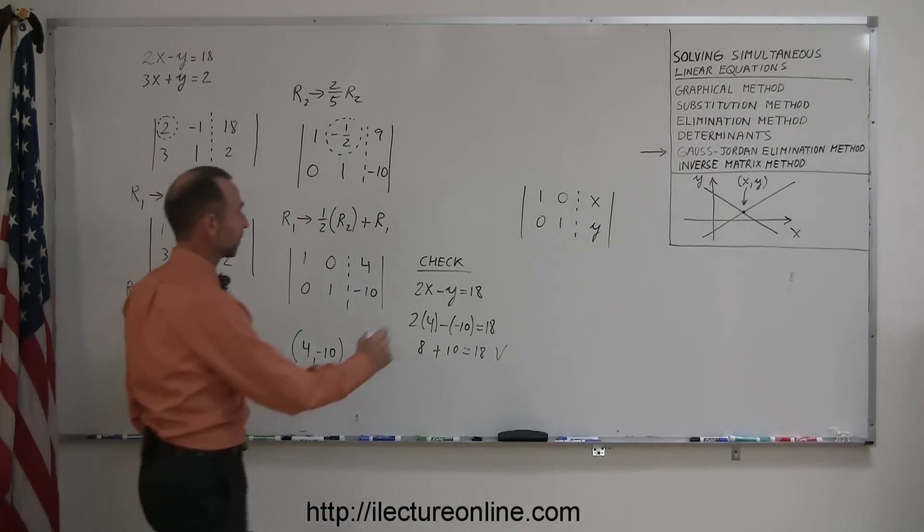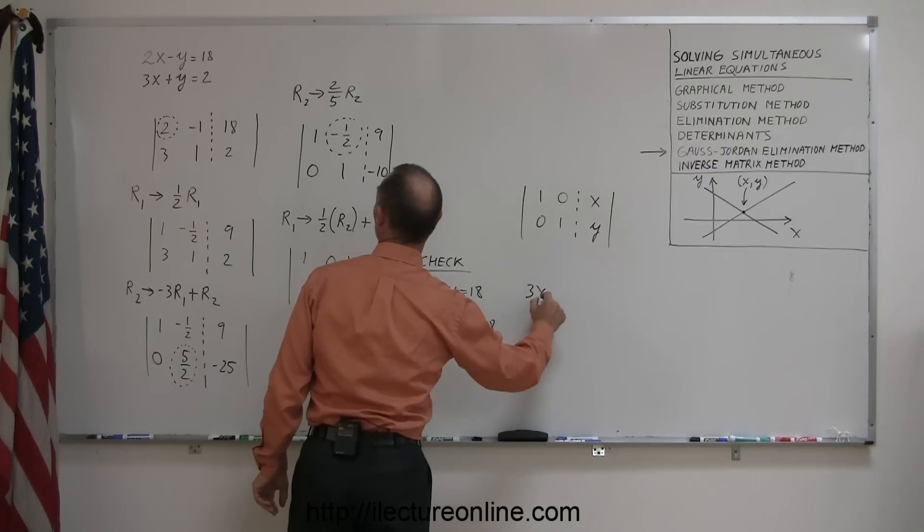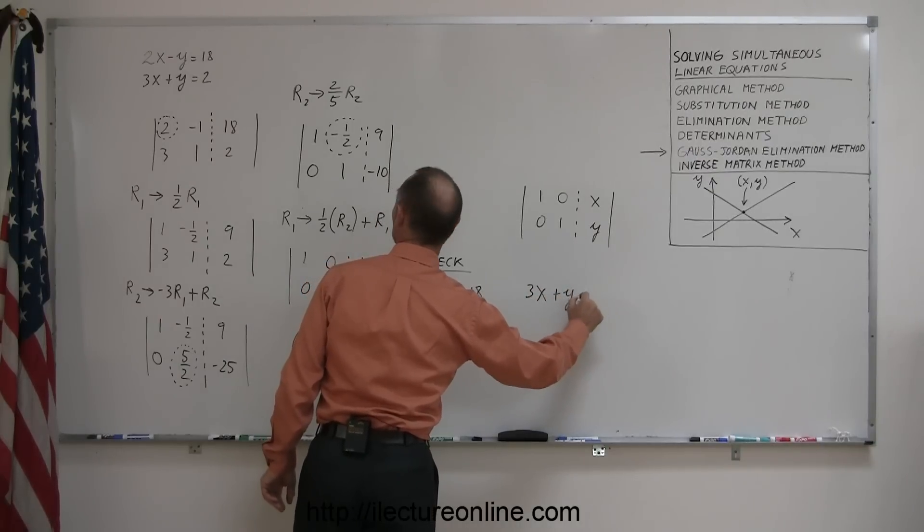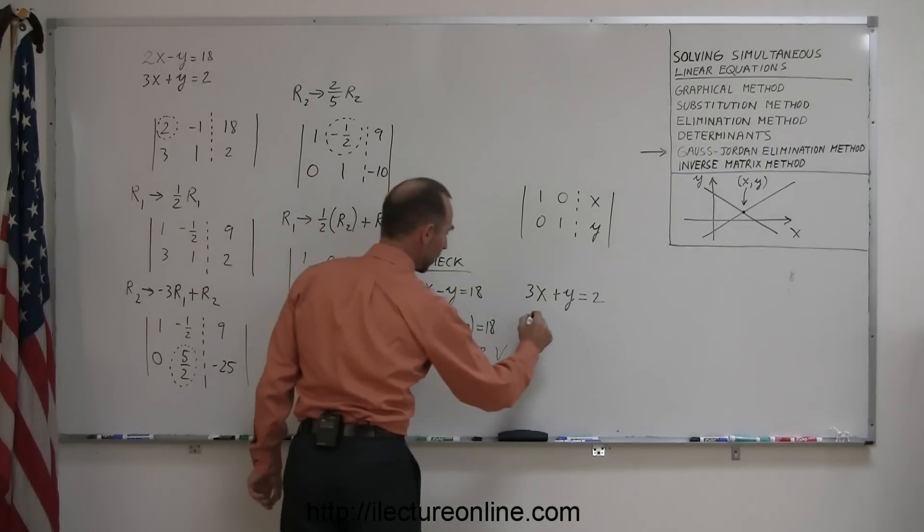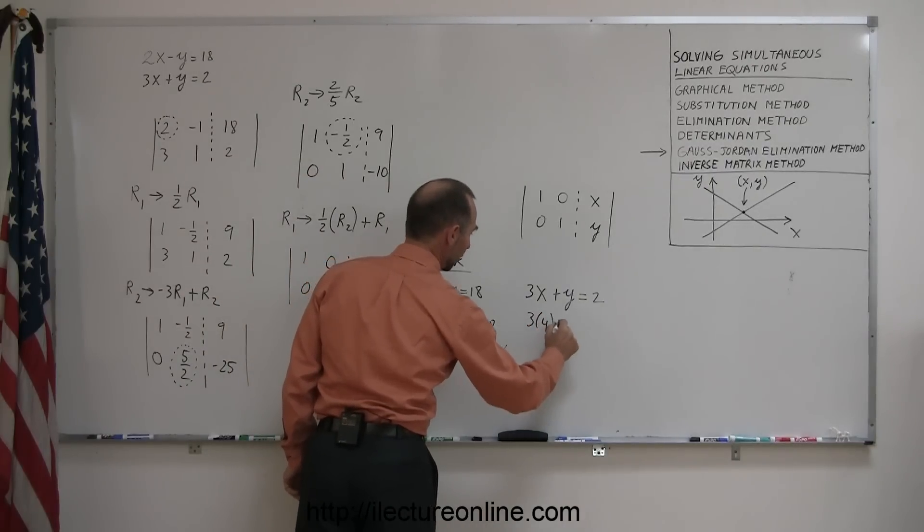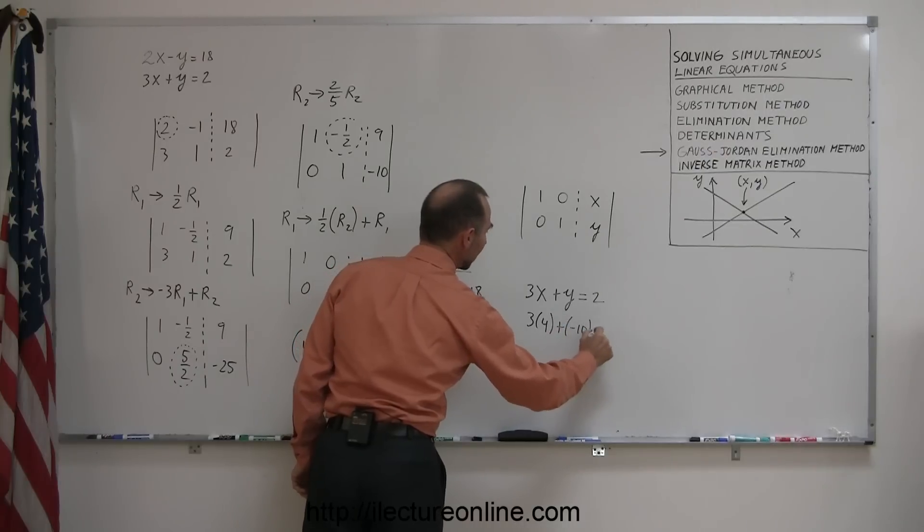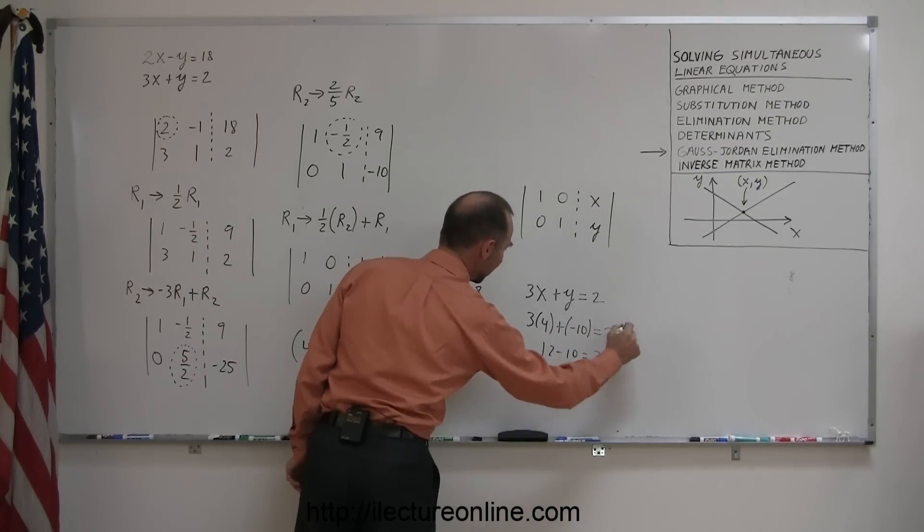Doing the same with the second equation, I have 3x plus y equals 2. Plugging in a 4 for x and a negative 10 for y, so 3 times 4 plus a negative 10 equals 2. That's 12 minus 10 equals 2, and yes, indeed, that's correct.